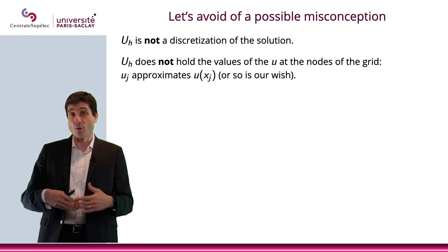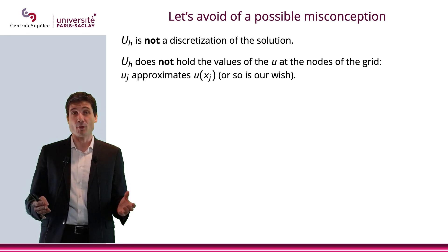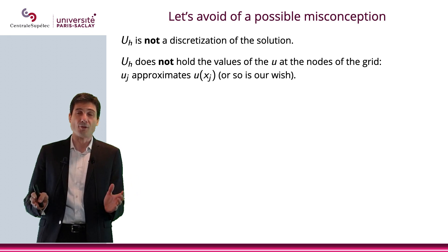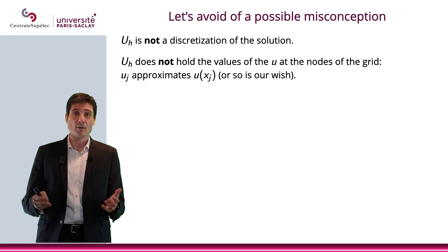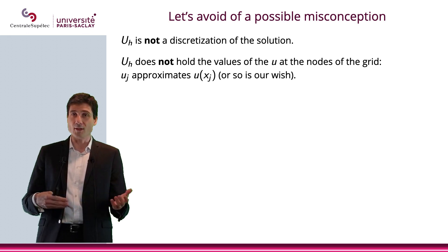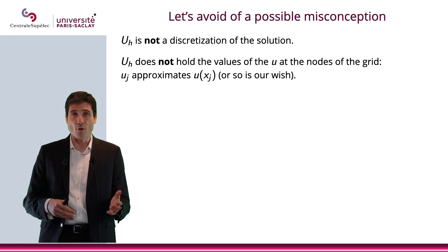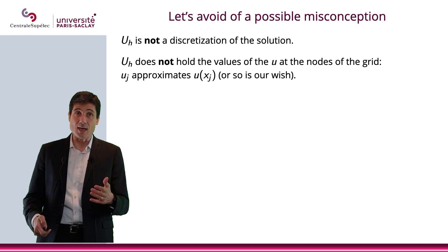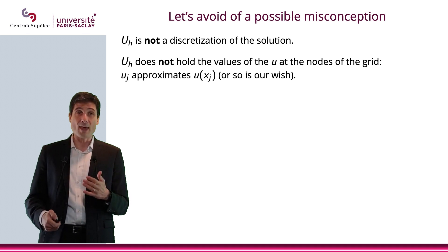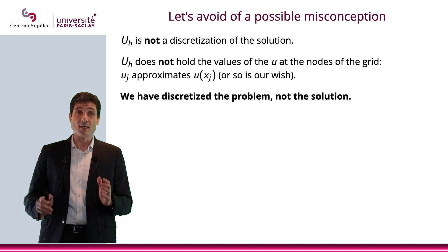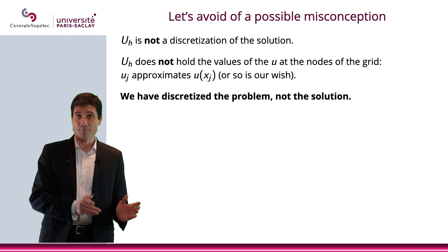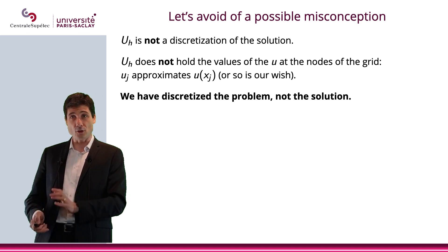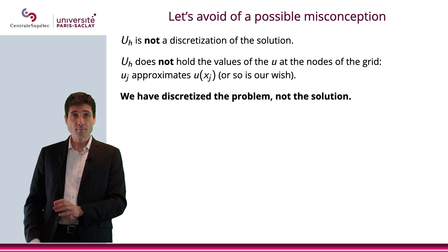If that were the case, then of course everything would be done — there would be nothing to do. We solved the linear system before, we would have the u_j, and that's it. But that's not the case. What we have done is discretize the problem. We have not discretized the solution.